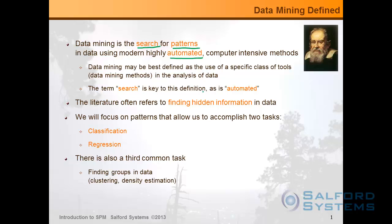When we talk about classical statistics, highly automated computer-intensive methods usually boils down to multiple linear regression or something like that. When we move into the data mining domain, we expand the concept of multiple linear regression to a lot more flexible, data-driven, and useful approaches. The term 'search' is key as it's automated. Some people say that data mining is finding hidden information in data, so you might as well stick to that definition.